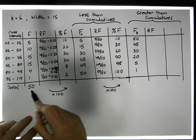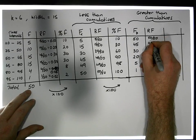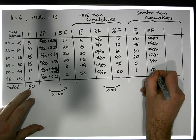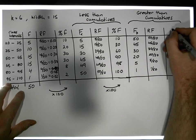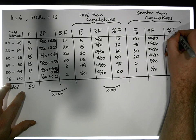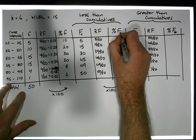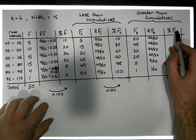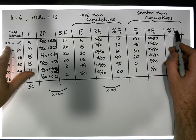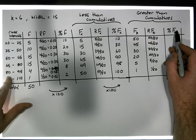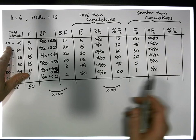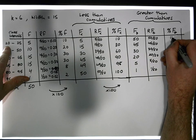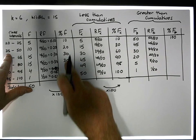Then we can do a relative greater-than-or-equal-to cumulative, expressing these cumulatives as a fraction of the total: 50/50, 45/50, 40/50, 20/50, 5/50, and 1/50 of the observations are greater than or equal to each lower bound. Then finally we can do our percentage greater-than-or-equal-to cumulatives. All of the observations are greater than 20, so it is 100% greater than 20. And greater than 35 there's 90%, removing the original 10%.